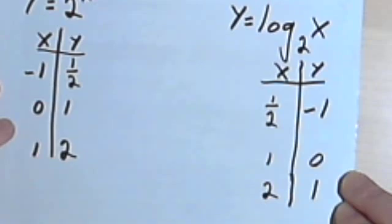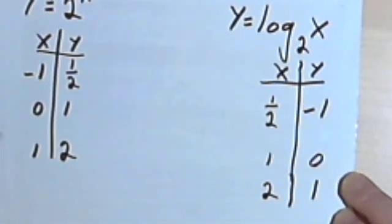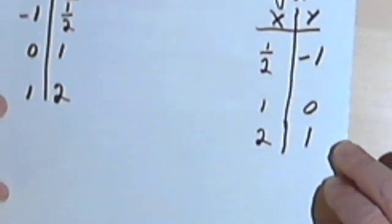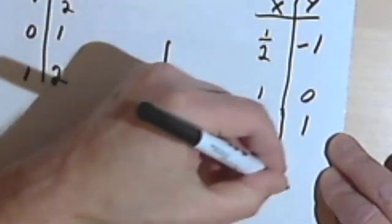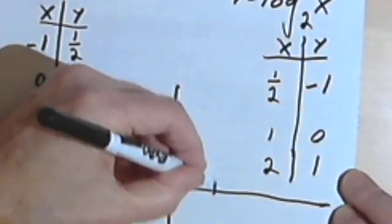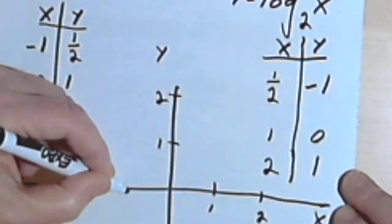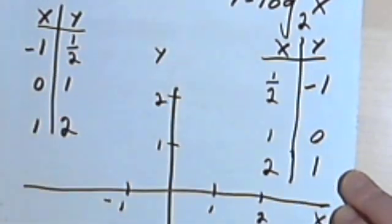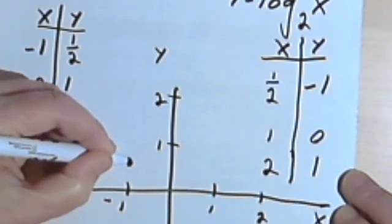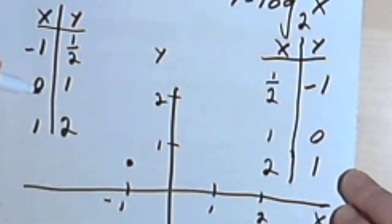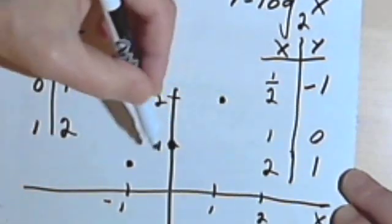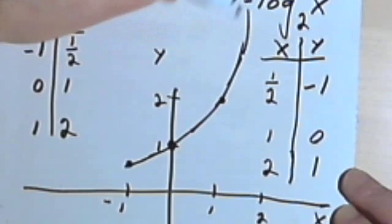I just want to take the rest of the video and quickly draw a graph of these two functions so we can see that we're really dealing with an inverse function. I've got my x and y axes. So starting with the exponential function. When x is negative 1, y is 1 half. So that would put me over here. When x is 0, y is 1. So that puts me right here on the vertical axis. And when x is 1, y is 2. So that would be here. And then exponential functions always form a nice curve.